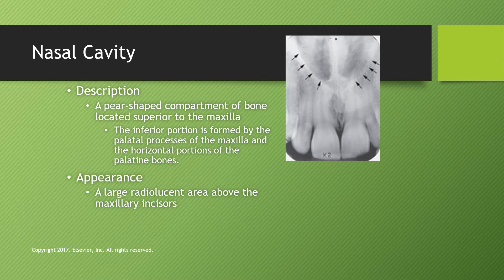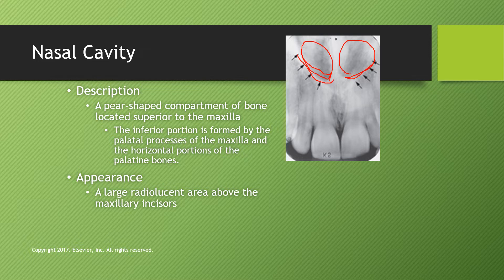The nasal cavity is a pear-shaped compartment of bone located superior to the maxilla. Its inferior portion is formed by the palatal processes of the maxilla and the horizontal portions of the palatine bones — essentially, the floor of the nasal cavity is the maxilla. It appears as a large radiolucent area above the maxillary incisors. The lateral walls are formed by the ethmoid bone and the maxilla, and the nasal cavity is divided by the nasal septum. It is also known as the nasal fossa.